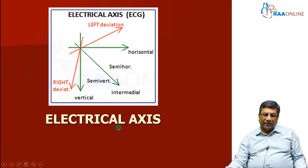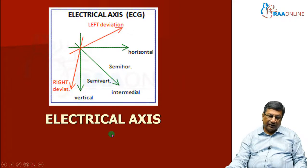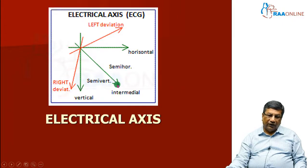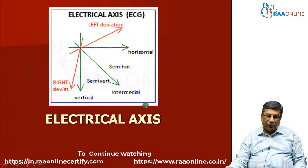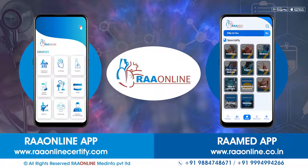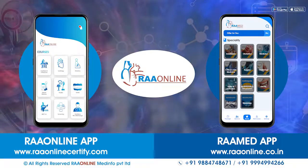Having seen how the ECG is influenced by horizontal depolarization by the ventricles in the chest leads, what is going to decide how the limb lead ECG complexes look? That is decided by the electrical axis. The electrical axis is what is happening to the resultant cardiac impulse, which is traveling from the right and superior region to the left and inferior region, and how it influences the limb leads. The configuration of QRS complex in the limb leads is decided by the electrical axis — the calculation of that electrical vector is called the electrical axis calculation.